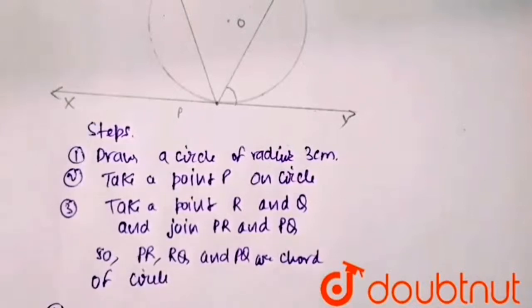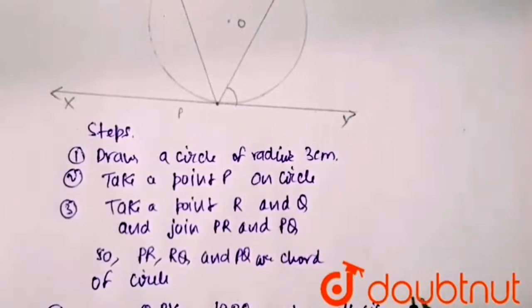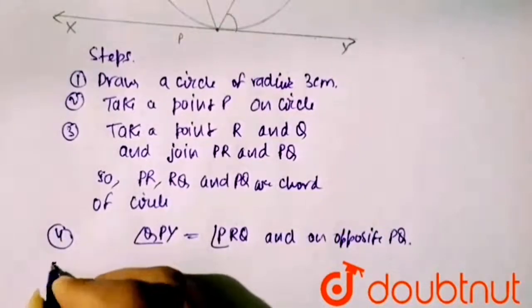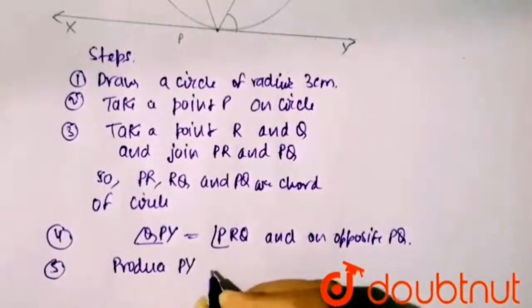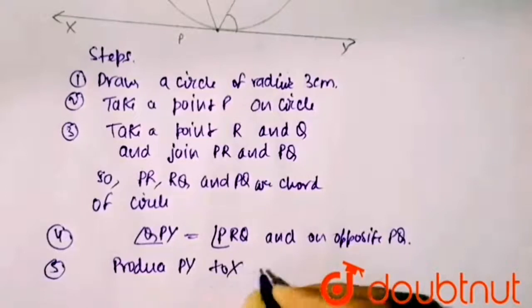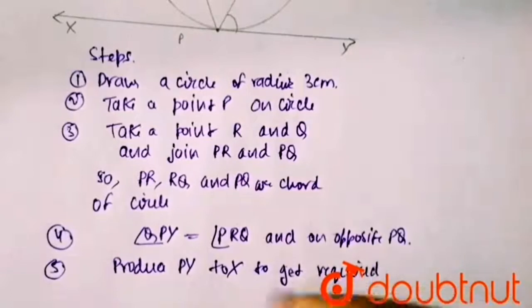So angle QPY is equal to angle PRQ, because they are on the opposite sides of chord PQ. Produce PY to X to get the required tangent XPY.